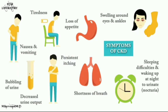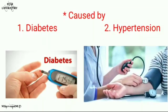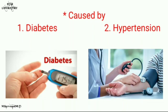The symptoms of CKD patients include tiredness, loss of body weight, loss of appetite, and swellings around the eyes, ankles, or other body parts. Also nausea, vomiting, bubbling of urine, decreasing urine output, itching, shortness of breath, sleeping difficulties, and waking up at night to urinate — called nocturia. The main reasons for chronic kidney disease are diabetes and high blood pressure. Even if you have diabetes, if you control your diabetic conditions and blood pressure, you need not worry about CKD.